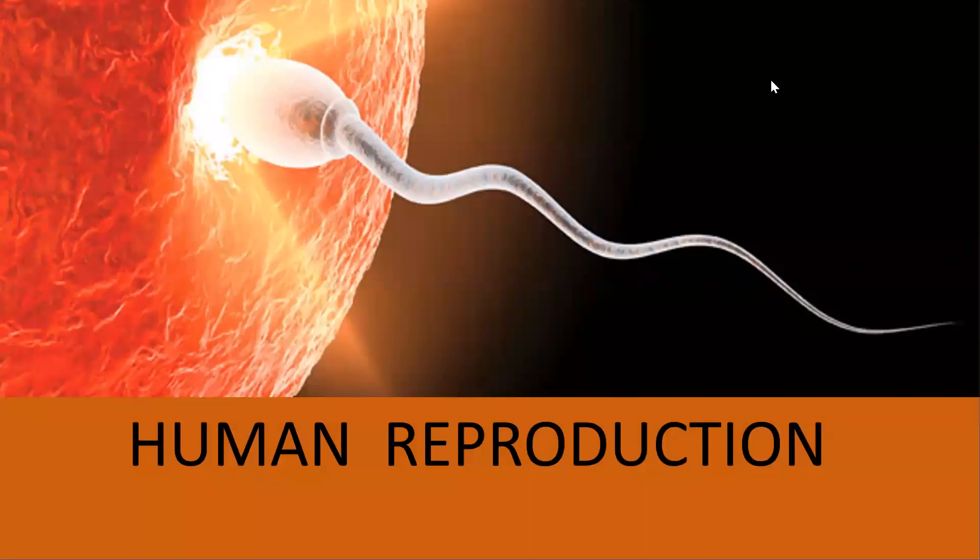Good morning students. In our previous class we have done the process of reproduction in plants. Now we have to start the same process in humans, and you will be surprised to note that though plants and humans are totally different in their structure and function, the basic mechanism of reproduction remains the same in both organisms.